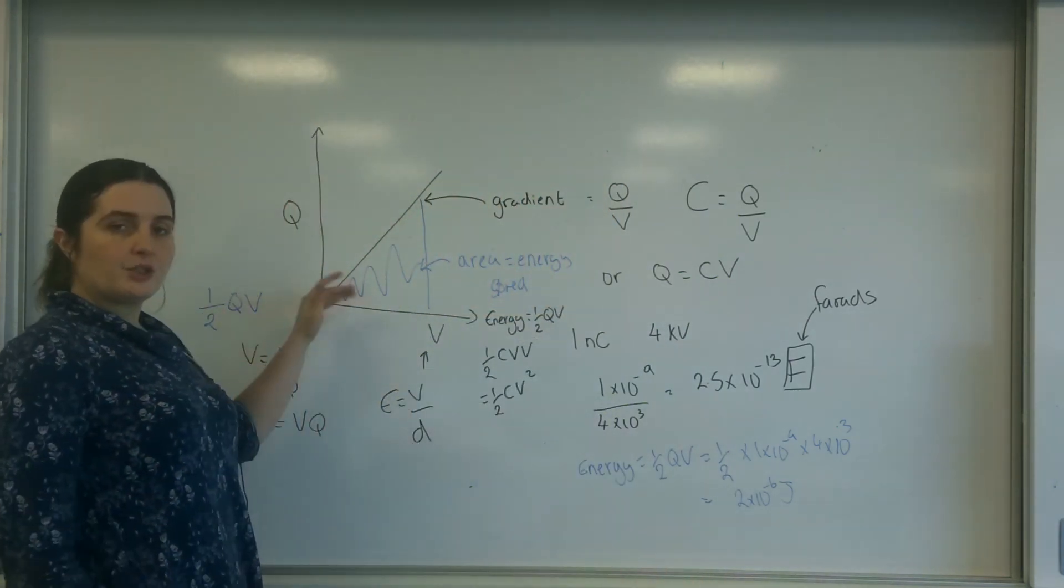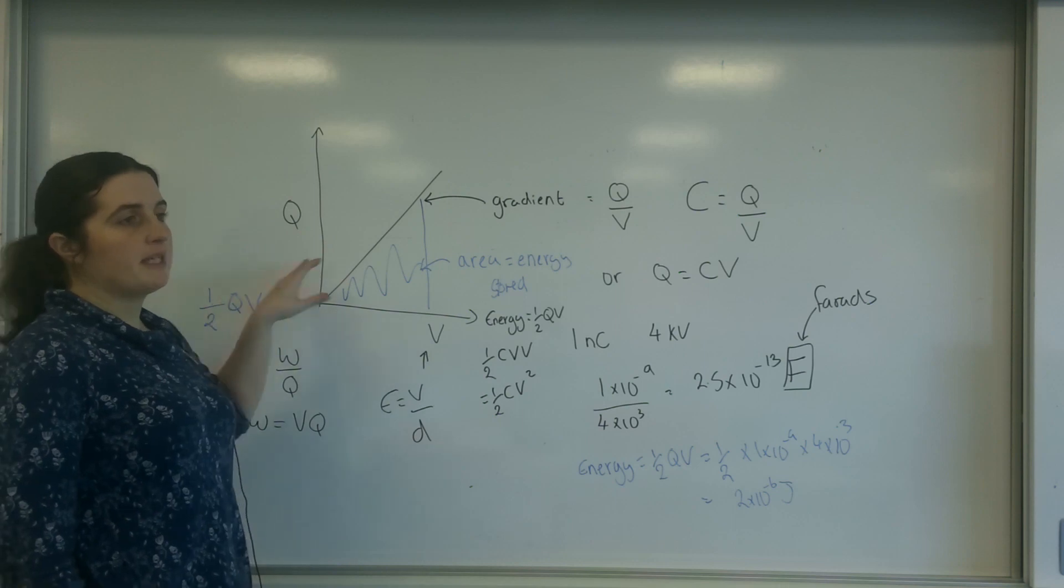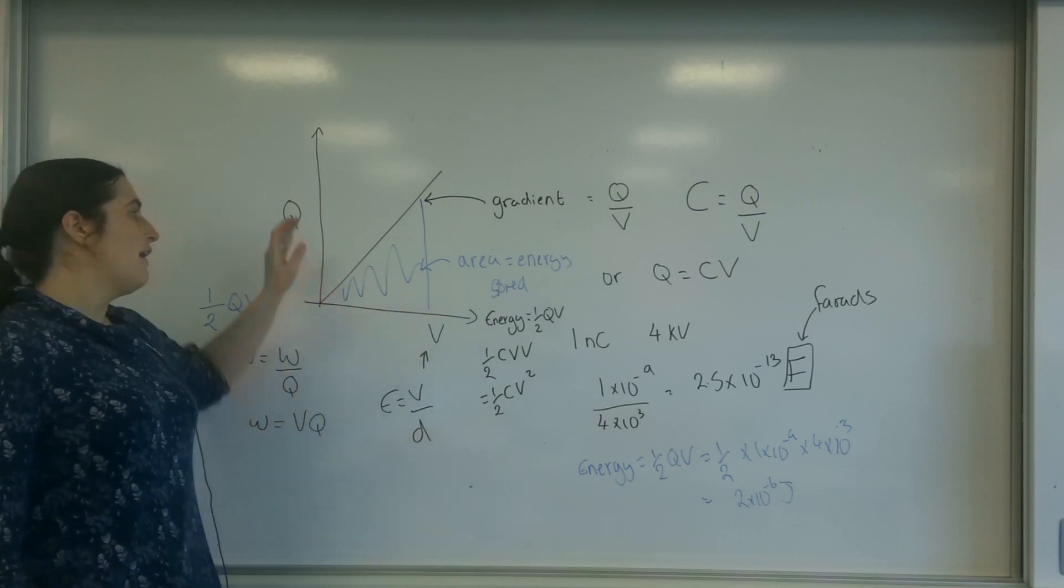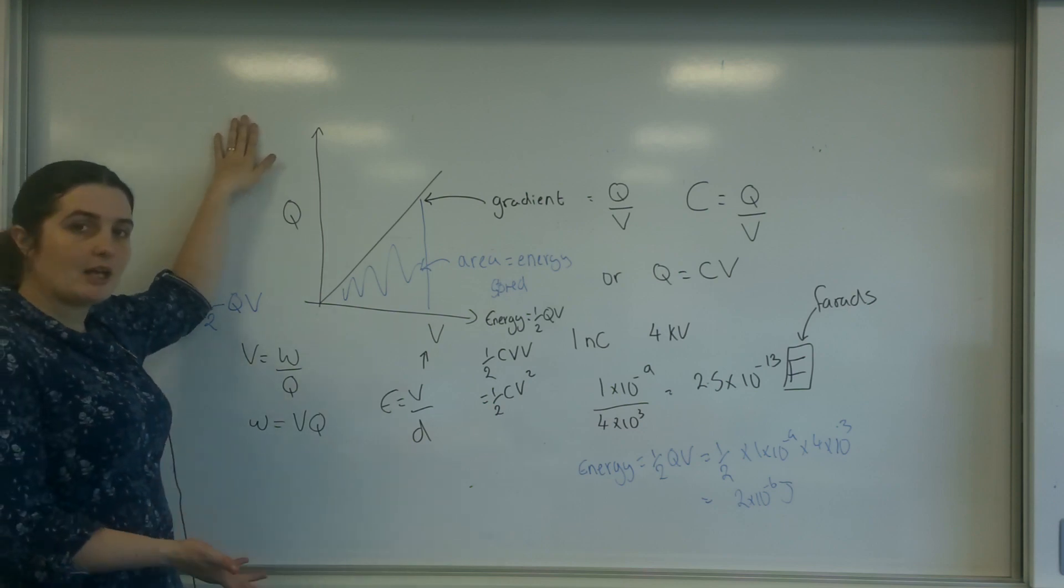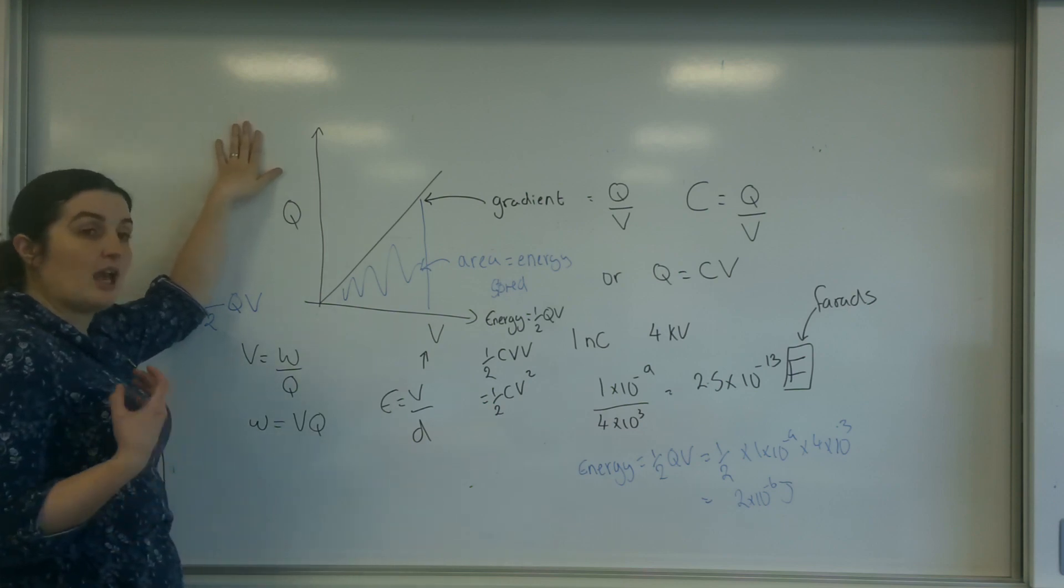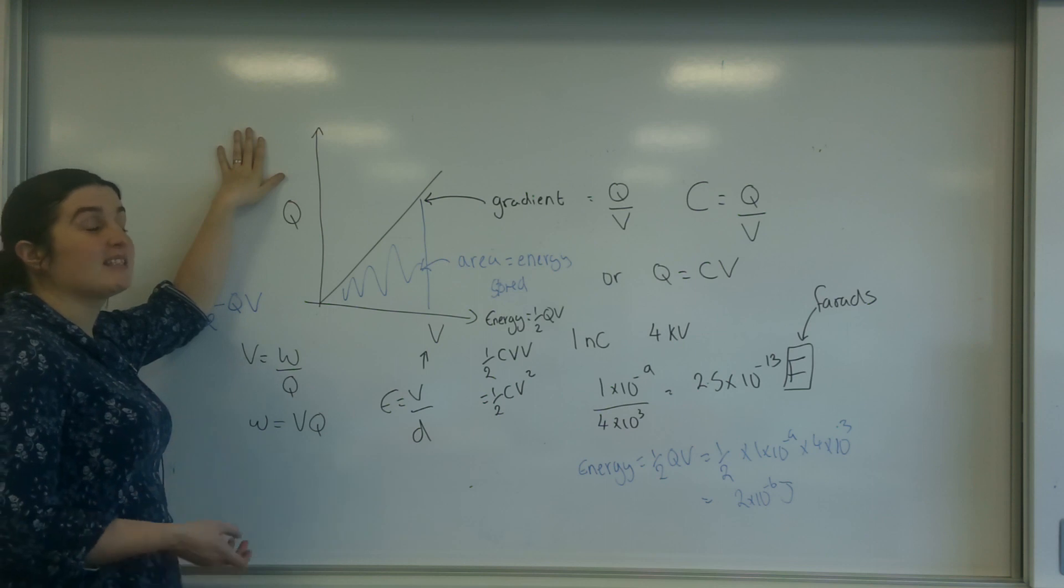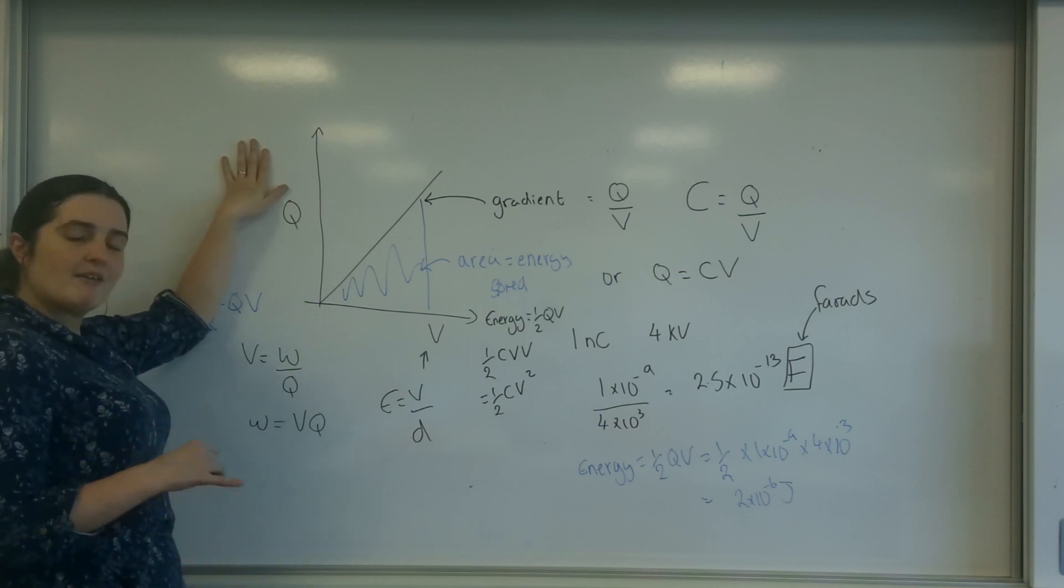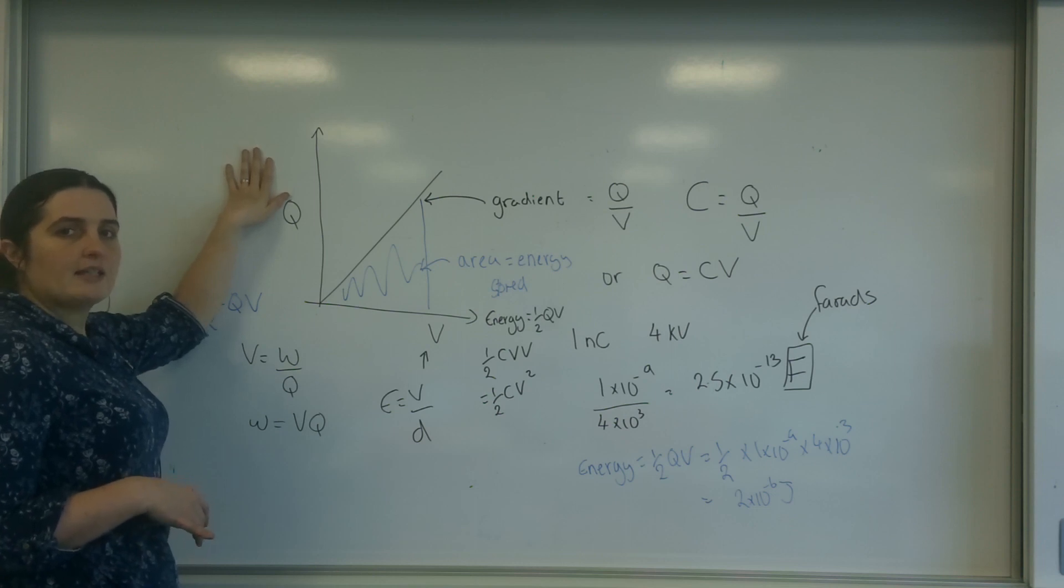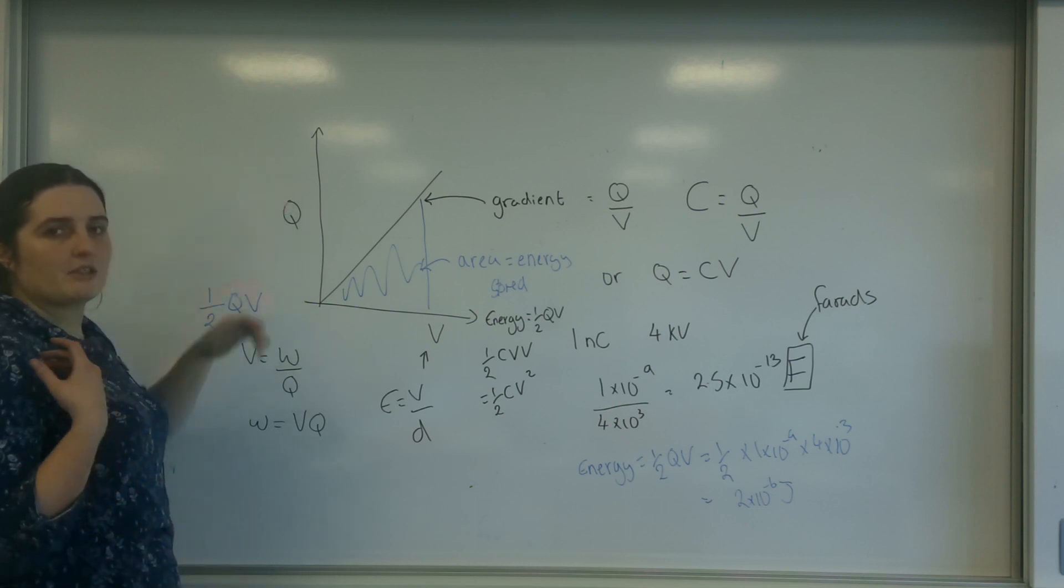So this graph of potential versus charge stored—this is the potential of the electric field I had to put over it and the amount of charge I stored. And this here, the gradient of this, is the capacitance of the object itself, the capacitor itself, because it's the ratio between how much charge I get for how much potential. And the area underneath this graph is going to be the energy that I store.